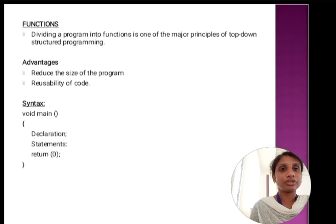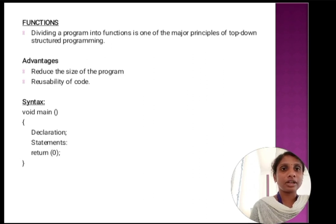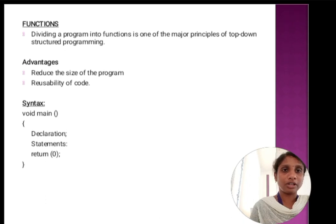Last one, we are going to see about functions. Dividing a program into functions is the major principle of top-down structured programming. It divides the code into blocks and executes as per the function calls. The main advantage of functions is it reduces the size of the program and enables reusability of code. The general structure of a function includes the main function, declaration statements, statements, and it returns zero. This is the general structure for the function.